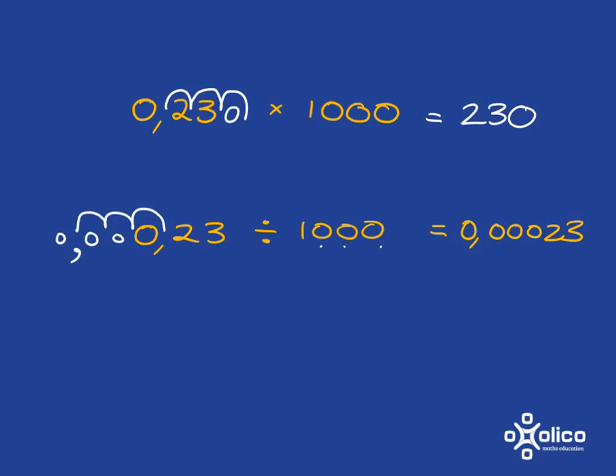So multiplying and dividing by 10 is very simple. It's just a case of changing the place value, and the easiest way to do that is by moving the comma.